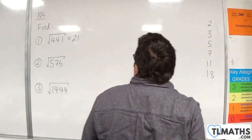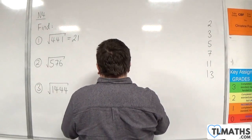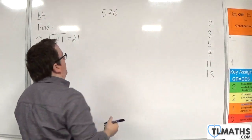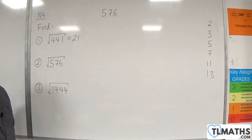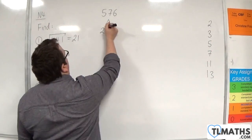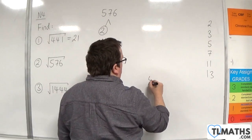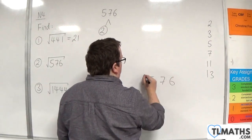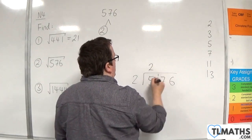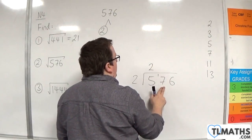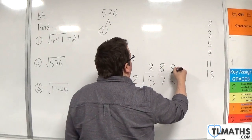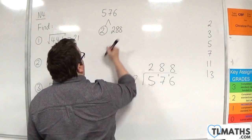Let's take a look at 576. Now 576 is even, so I can divide it by 2. How many 2s go into 576? Let's do a bit of short division: 2s into 5 go twice with remainder 1, 2s into 17 go 8 with remainder 1, 2s into 16 go 8. So we get 288.